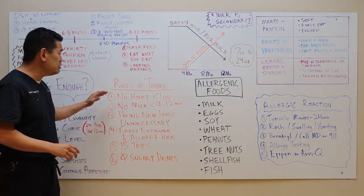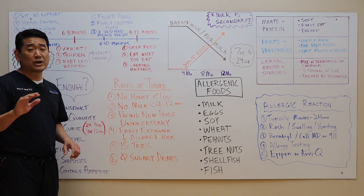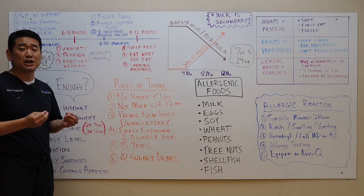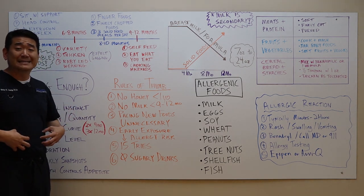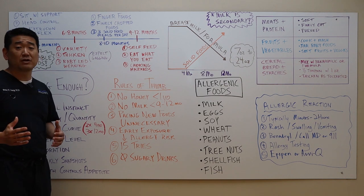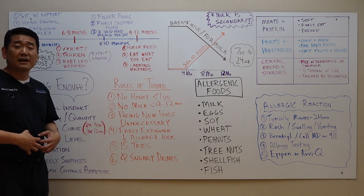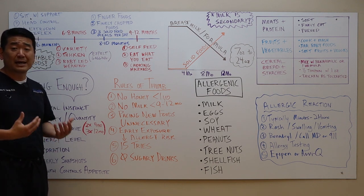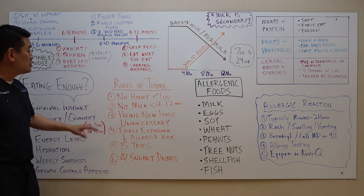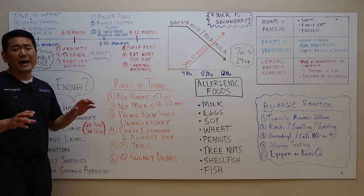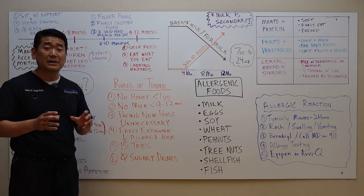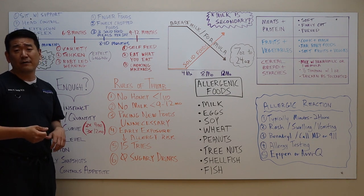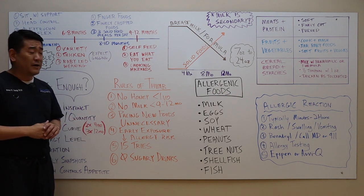Some general rules of thumb as you start solid foods. First of all, no honey until one year of age. There is a very dangerous infection called botulism, which can happen if you give honey to a young, immature baby whose gut is not populated with healthy bacteria. After one year of age, honey is not a problem. But under one year of age, there's a lot of open real estate. If you eat that honey and that bacteria gets into your intestines, it can grow and create a toxin, which can cause a lot of complications and side effects. So under one year of age, no honey. Giving a little bit of like honey flavored Cheerios, that's not going to be an issue. But if you're giving straight up honey, for example, the kind of honey that you buy at the local farmer's market, that type of honey, you want to be very careful about.